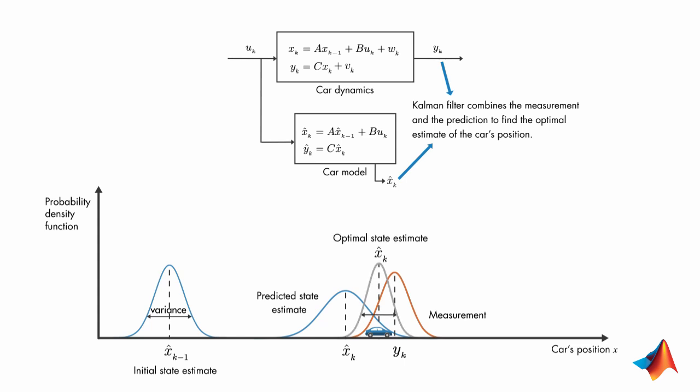This optimal estimate is found by multiplying the prediction and measurement probability functions together, scaling the result, and computing the mean of the resulting probability density function.